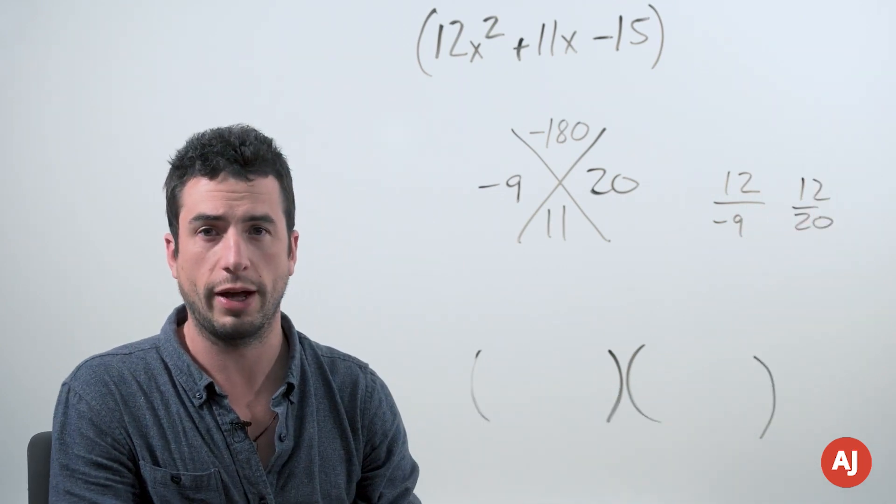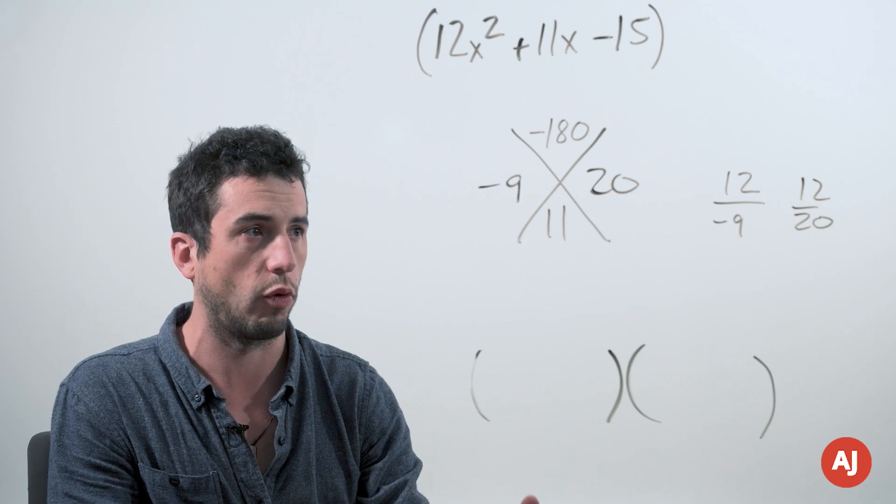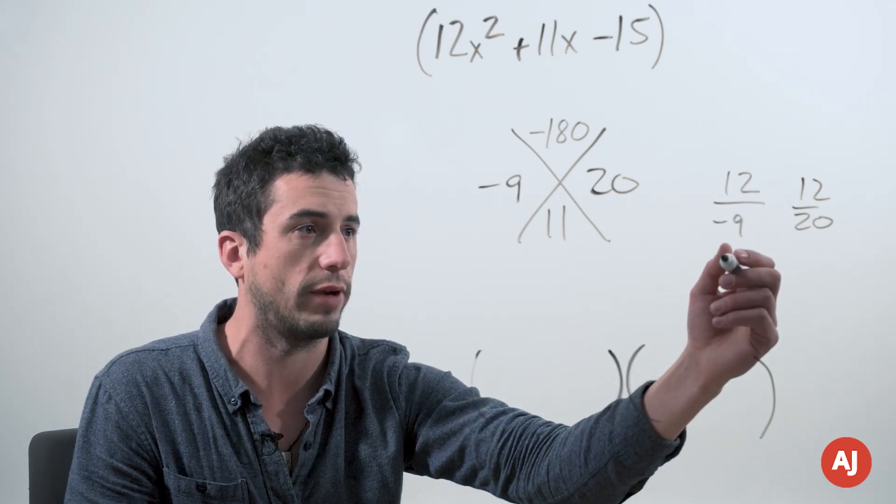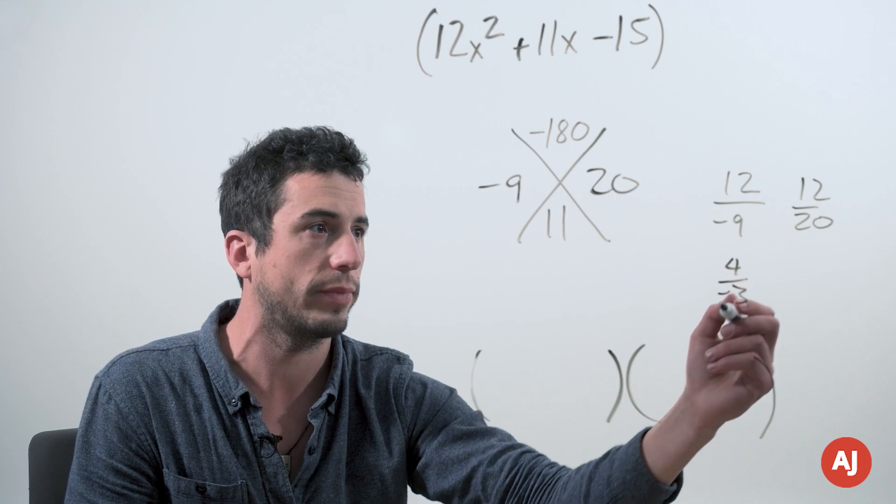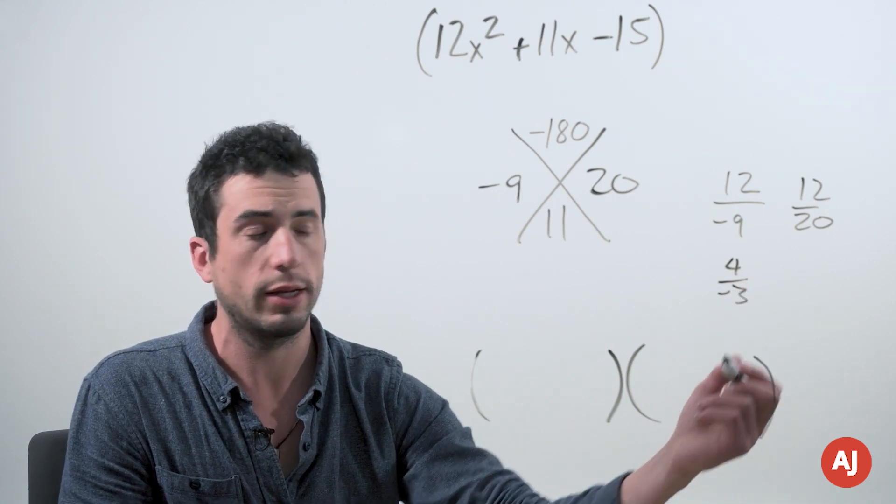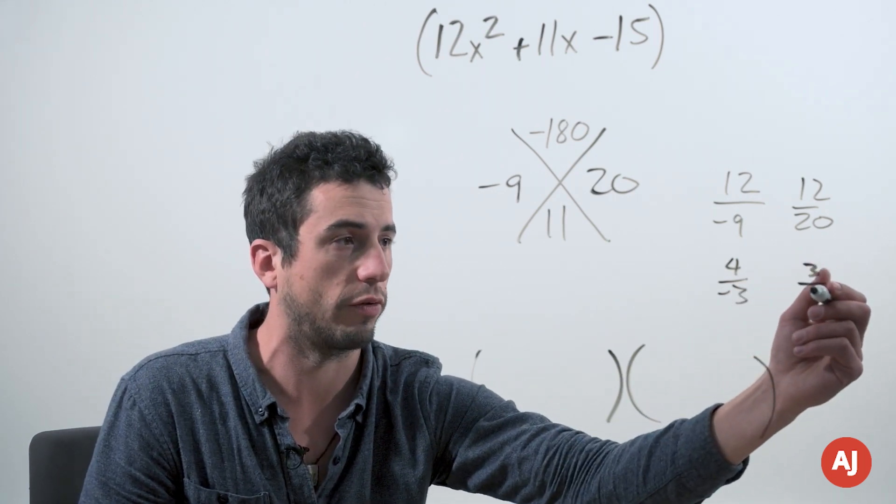Now if those fractions can simplify, we have to do that before we can move forward, and they do here. 12 over negative 9 simplifies into 4 over negative 3, and 12 over 20 simplifies into 3 over 5.